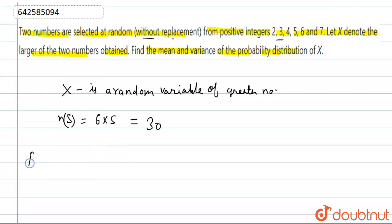So the total sample space is equal to 30 if we select two numbers without replacement. Now, P value of X will be either 3, 4, 5, 6, and 7. Now P(X=3), this will be equal to (2,3) or (3,2). This will be equal to 2 by 30.